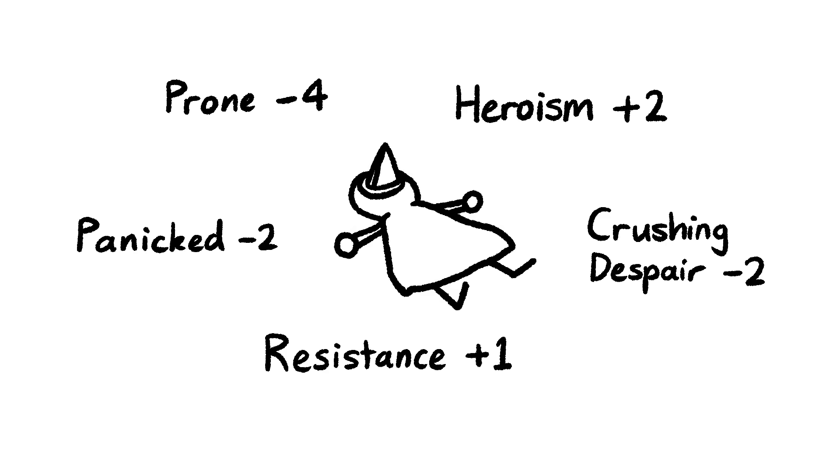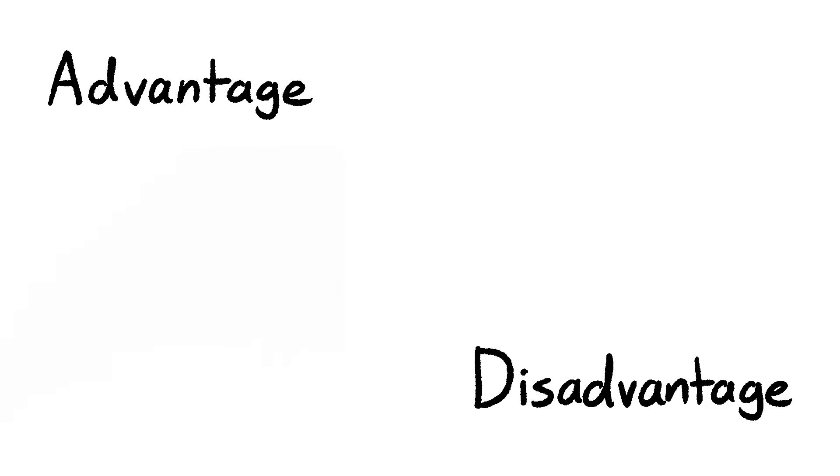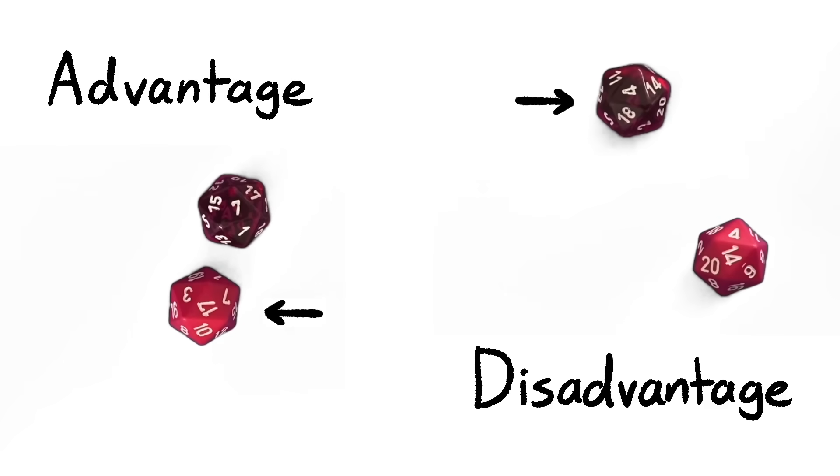Now, having tons of modifiers from lots of different effects is often annoying to add up on the fly, so in 5th edition, the most recent edition of Dungeons & Dragons, many of these modifiers have been replaced with a different system called Advantage and Disadvantage. If you have Advantage, you roll 2 dice and take the highest number, and if you have Disadvantage, then you roll 2 dice and take the lowest.